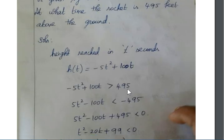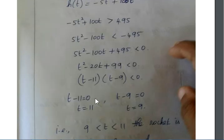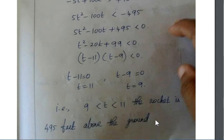So h(t) equals negative 5t squared plus 100t, which must be greater than 495. Rearranging gives negative 5t squared plus 100t minus 495 greater than 0. Multiplying by negative 1, we get 5t squared minus 100t plus 495 less than 0. Using the quadratic factoring method, we get (t minus 11)(t minus 9) less than 0, giving t equals 11 or 9. Therefore, between 9 and 11 seconds, the rocket is 495 feet above the ground.